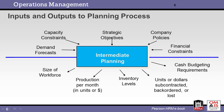Typical inputs and outputs to the planning process are shown here. Forecasts and constraints define the plan, which creates staffing, production, inventory, and budget plans for the operation.